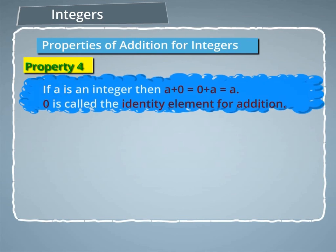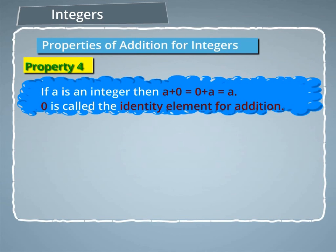Property 4: If A is an integer, then A plus 0 is equal to 0 plus A is equal to A. 0 is called the identity element for addition.